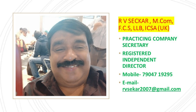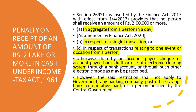Section 269ST, as inserted by the Finance Act of 2017 with effect from 1st April 2017, provides that no person shall receive an amount of rupees 2 lakhs or more in cash in aggregate from a person in a day, in respect of a single transaction, and in respect of transactions relating to one event or occasion from a person, otherwise than by an account payee cheque, account payee bank draft, or use of electronic clearing system through a bank account or through such other electronic mode as may be prescribed.